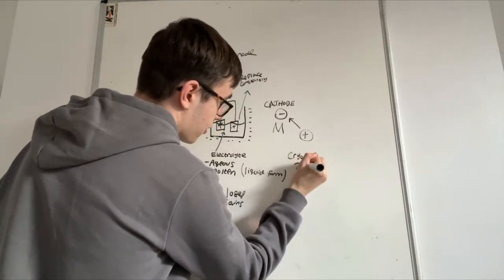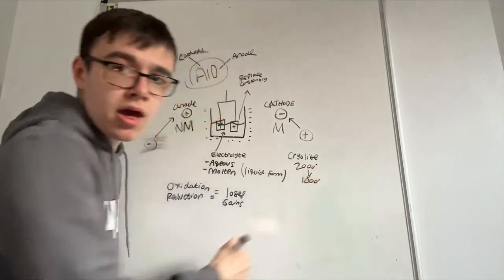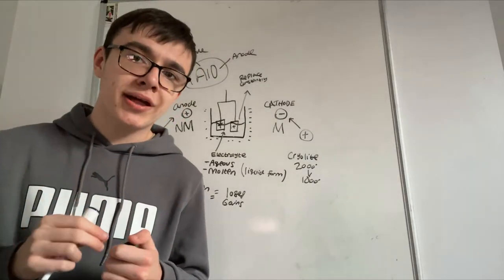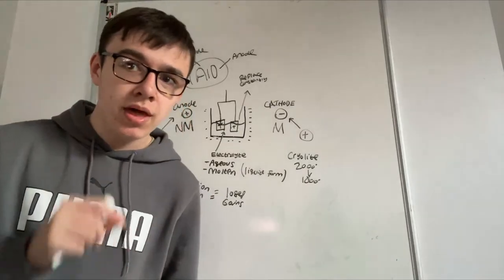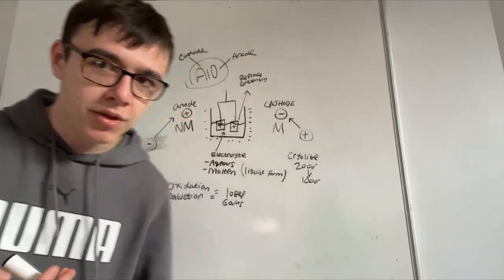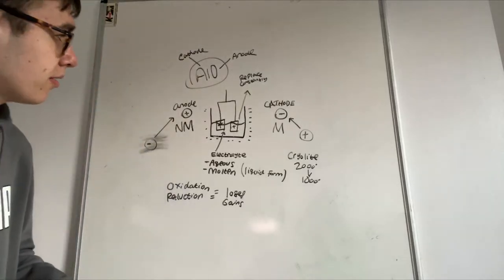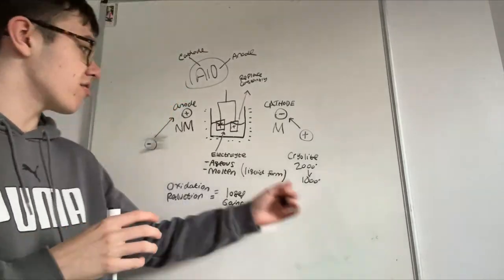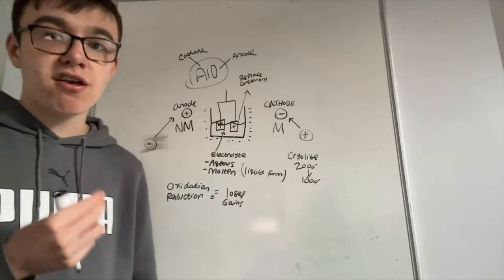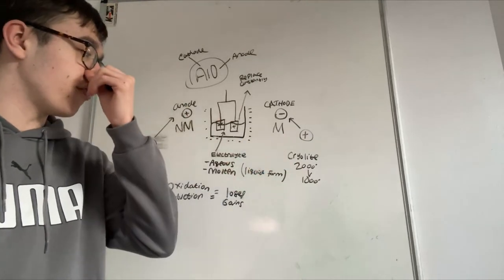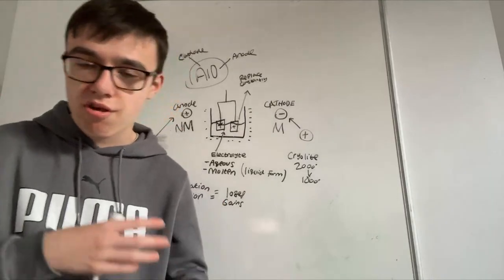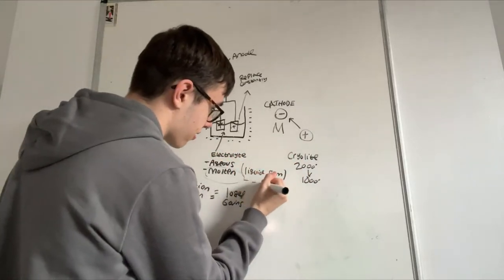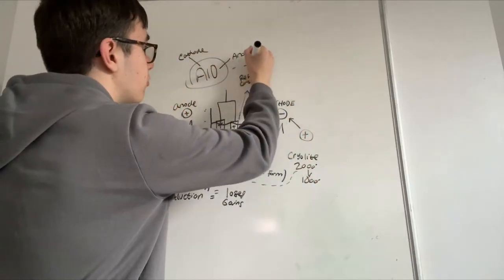Cryolite reduces it from about 2,000 to 1,000 degrees. Remember, an ore is a metal in a rock which is economically viable to extract - that is a definition worth two marks in the exam. Heating something to 2,000 degrees is going to be expensive, so obviously you're going to use cryolite to reduce it quite significantly, saving costs and energy. Remember aluminium can't be an aqueous solution - it has to be molten.